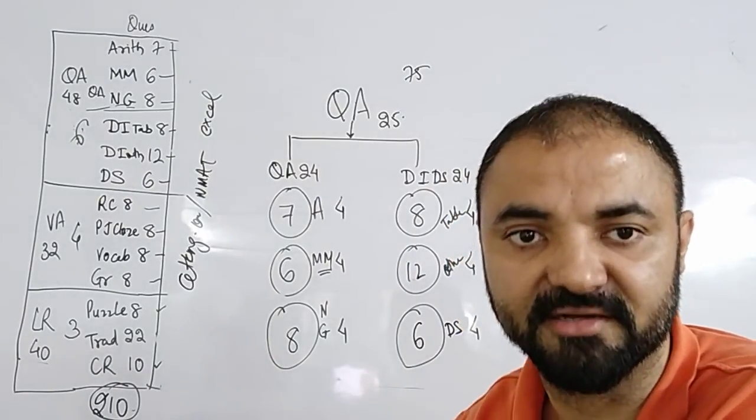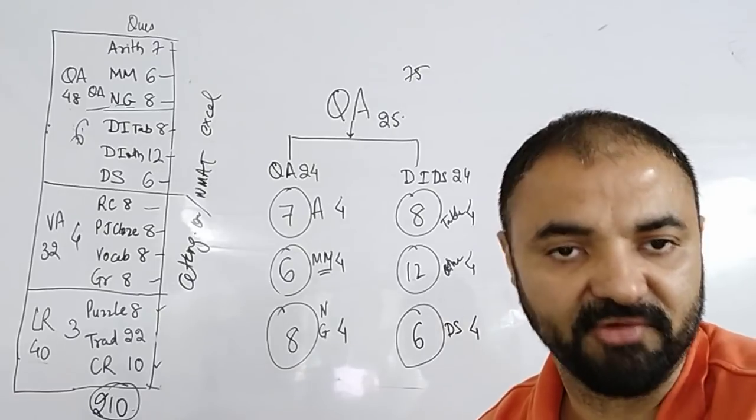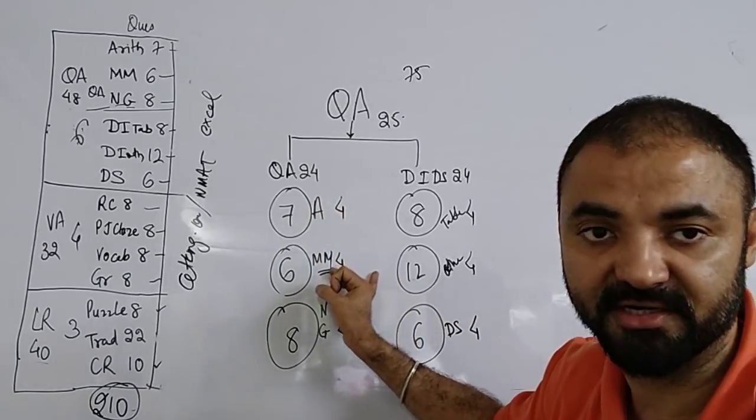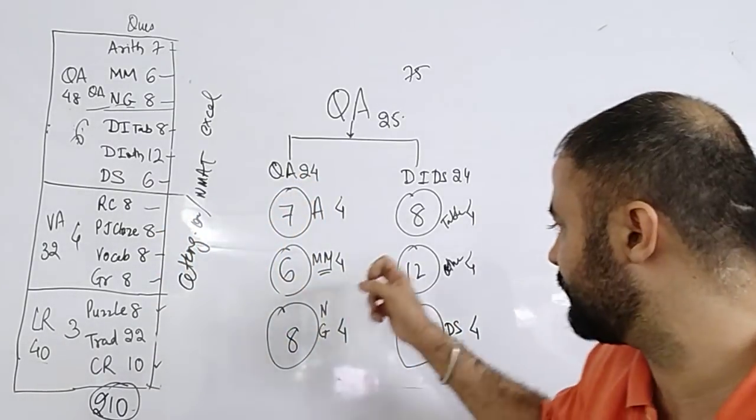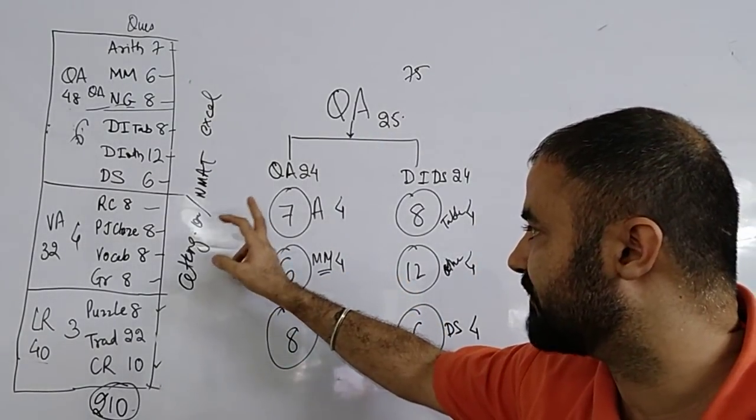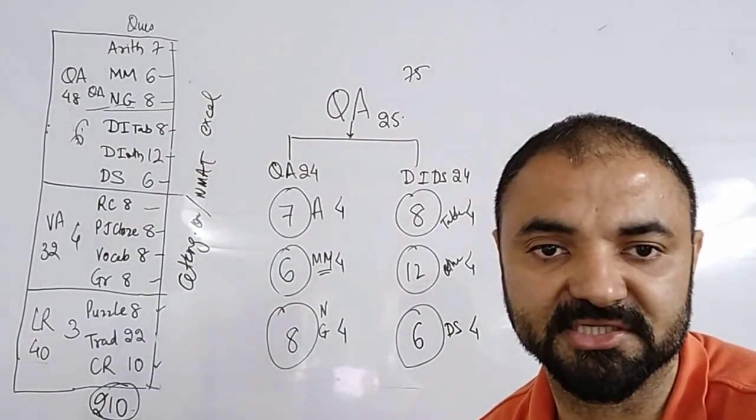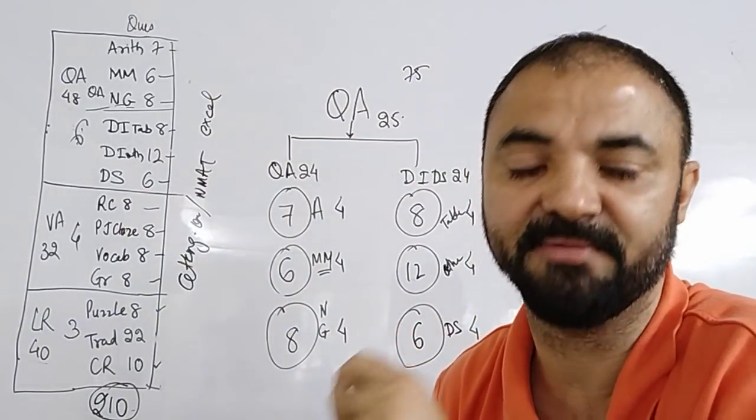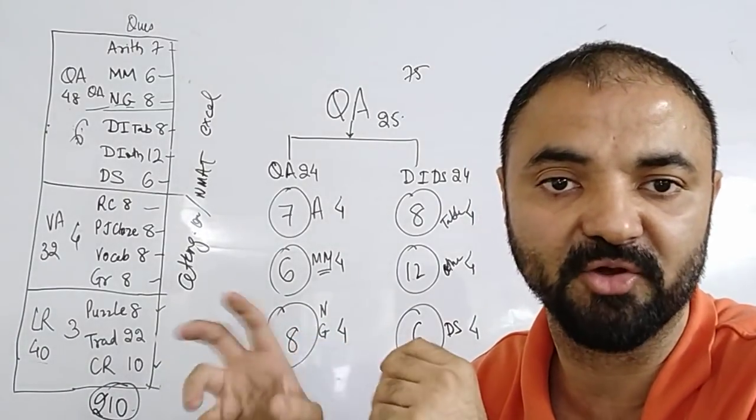There is one way to look at it: I want to do good in everything. Method number 2 is what I can do is be best in something. For example, if I'm very good in DI tables, DI bar graphs, I'm okay with—so I will target 10 out of 12. Data sufficiency, out of 6 I'll target 5. For quant, arithmetic is good, modern maths is good. Like this we have to go deep down into each section. The moment you do that, you'll be able to analyze your marks very nicely and score more marks.